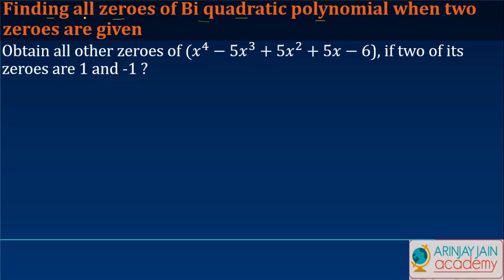In this video, we are going to see how to find all the zeros of a biquadratic polynomial when two zeros are given. A biquadratic polynomial is one in which the degree of the variable is 4.